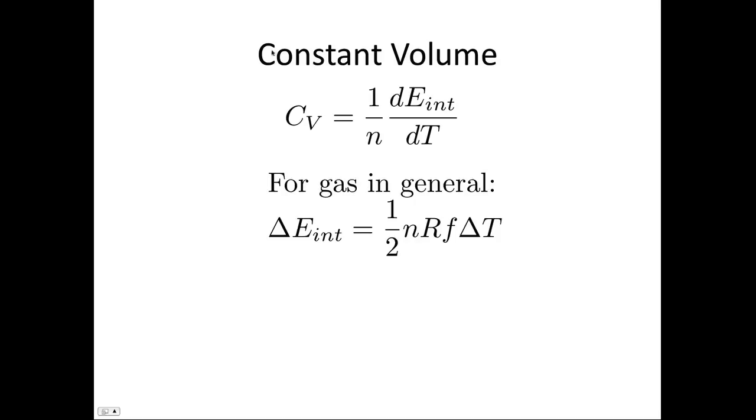So at constant volume, we've got Cv is equal to 1 over n times the change in internal energy over the change in temperature. So for the general case of a gas, instead of having the 3, we have the F, the number of degrees of freedom. So just substituting this in, and remember this is just a delta T, so these will cancel, we end up with Cv is equal to 1 half FR. So this equation is provided for you on the formula sheet.